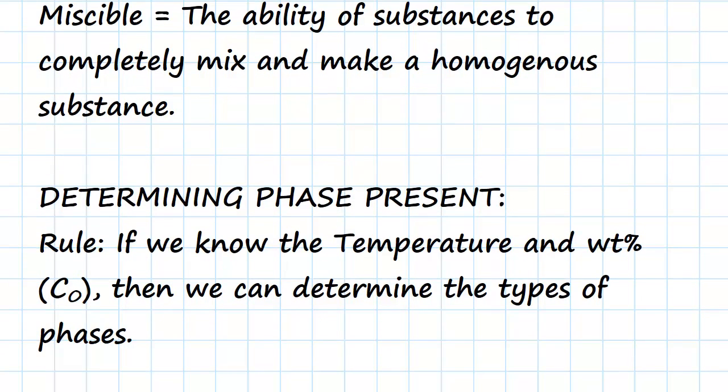So now let's get into the phase diagram. How can we determine the phase present? Well, as a rule, if we know the temperature and the weight percent, which we call CO, then we can determine the types of phases.